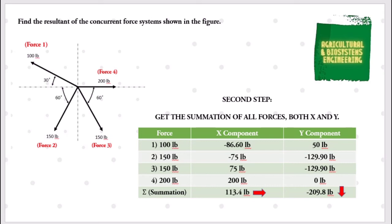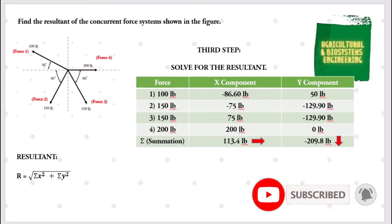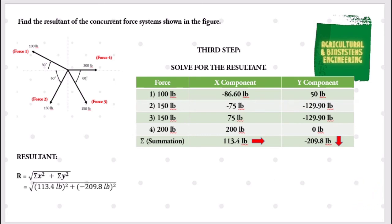These directions will help us determine the direction of the resultant. To solve for the resultant, we use: R equals the square root of the sum of the squares of the x and y components. Substituting, we have the square root of 113.4 pounds squared plus negative 209.8 pounds squared. Solving this, the resultant is 238.49 pounds.